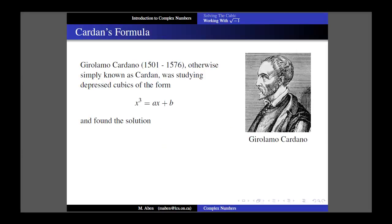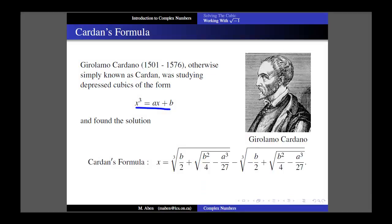A little later on, a mathematician named Gerolamo Cardano - often just called Cardan - who worked in the early part of the 16th century, was also studying the cubic. He was studying cubics of this form: x³ = ax + b. He came up with this solution, remarkably similar to del Ferro's. I want to draw attention to the similarity between the two.